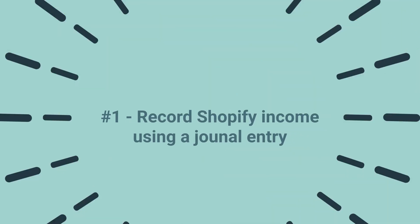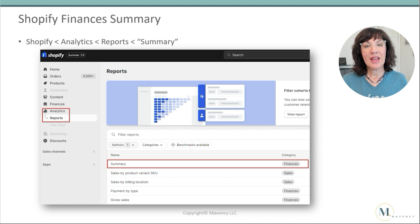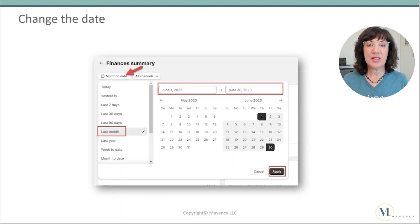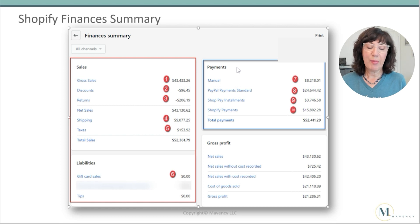Let's start with step one — we're going to record Shopify income using a journal entry. You'll need to go to Shopify to find the Shopify finances summary. Go to Shopify, Analytics, Reports, and then select Summary. Next, change the date — in this case I'm changing it to last month, then click Apply. You'll see the finances summary in Shopify. On the left you'll see Sales and Liabilities, and on the right you'll see Payments, which are the payouts. I've coded each one of these, and you'll see what that means in a moment.